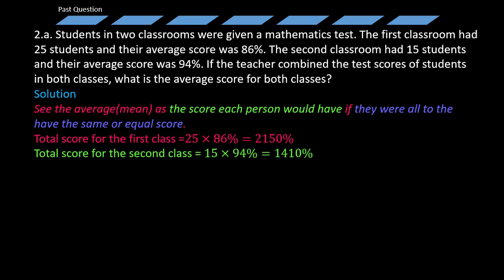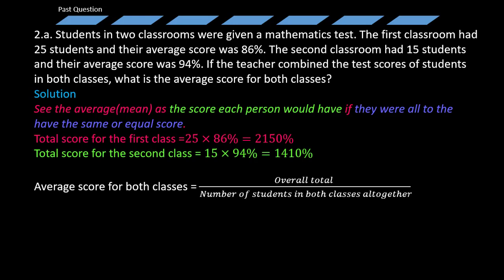So what we'll simply do is add the total scores for both classes and divide it by the total number of students in both classes to get our new average. The average score for both classes will be equal to the overall total over number of students in both classes altogether. That is simply going to give us: average score for both classes equals 2150% plus 1410% all over 25 plus 15, and that simply equals 3560% over 40, which equals 89%. So that means the total score for both classes is 3560%, and the total number of students in both classes is 40, since 25 plus 15 equals 40, and that gives us the answer 89%.